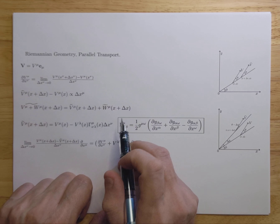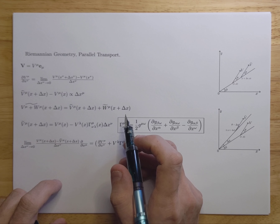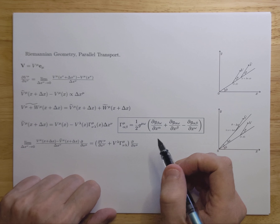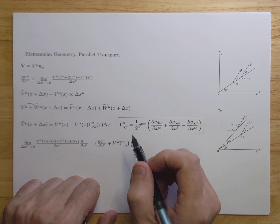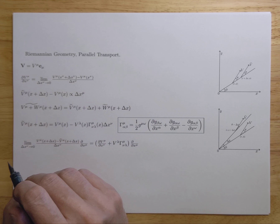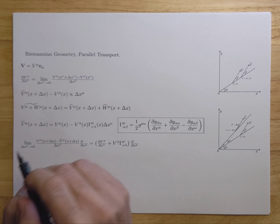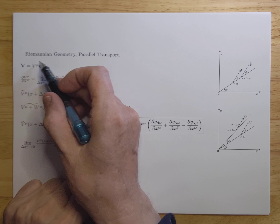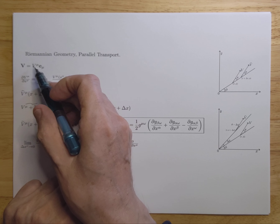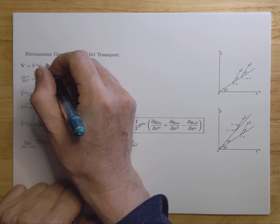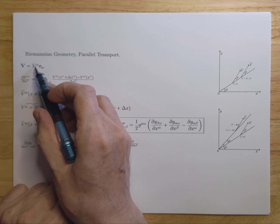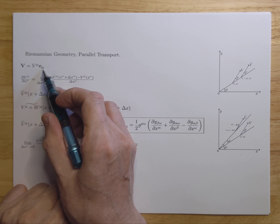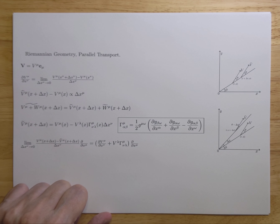That's just the definition of differentiation. That's not possible in Riemannian geometry or in curved space, because the basis vectors change. As a side note, I use the Einstein summation convention here, where I implicitly sum over the components and over the basis vectors.